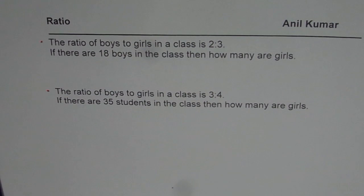And the second question is similar with a minor difference. The ratio of boys to girls in a class is 3 is to 4. If there are 35 students in the class then how many are girls?